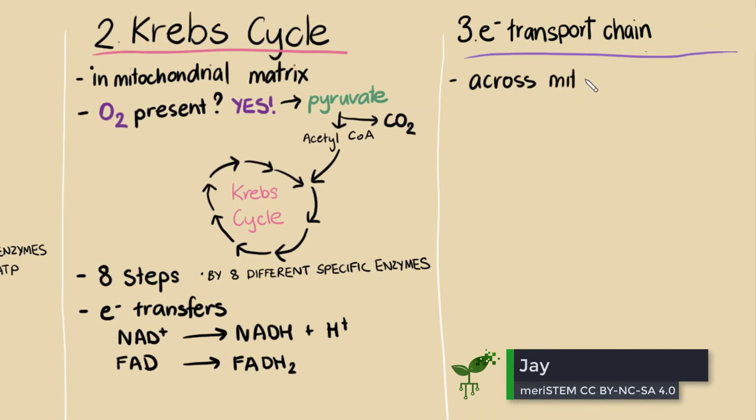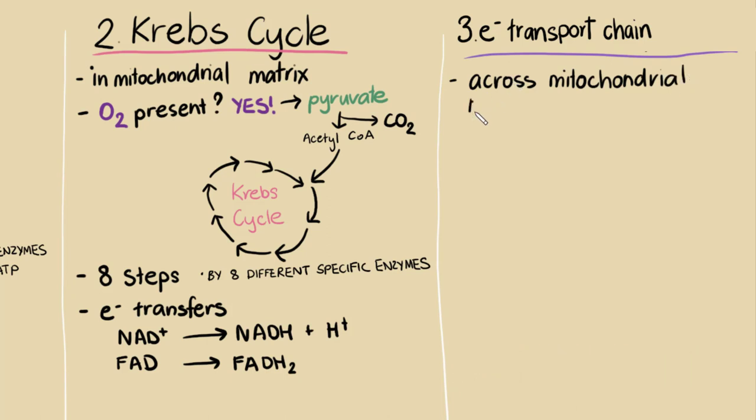The final part of respiration relies on the electron transport chain, and I mentioned it happens across the mitochondrial inner membrane. Now I'm going to draw a few more pictures to explain how this works, because the shape is really important for what it does.